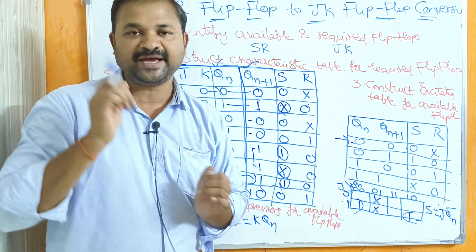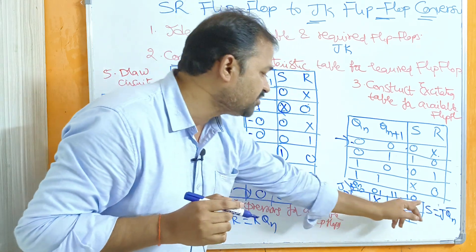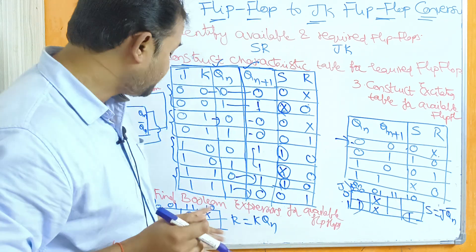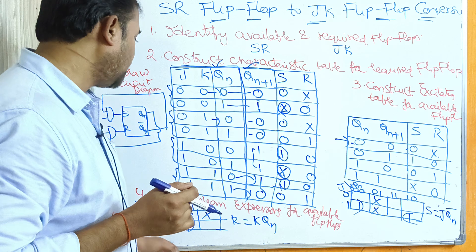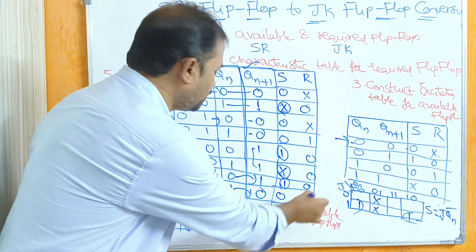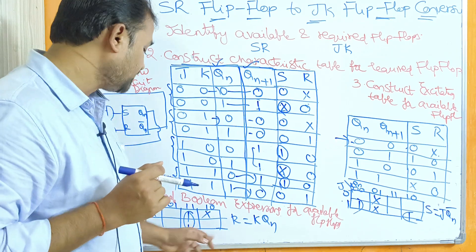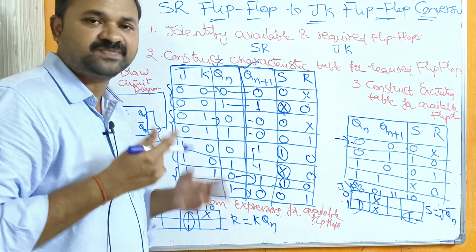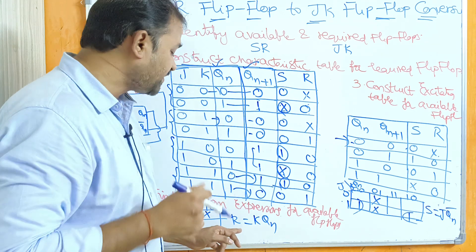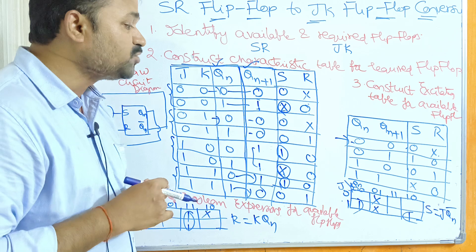We can combine the two cells with value 1 at positions 100 and 110 as a pair. J is common and the second variable QN is 0 in both, giving QN bar. So S = J·QN̄. For the R K-map, we have two don't cares and two ones. Combining the two ones as a pair, J is changing so it is not considered, and K=1, QN=1 in both. So R = K·QN.